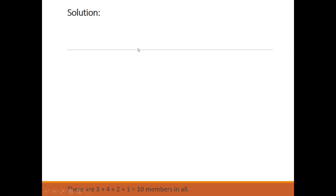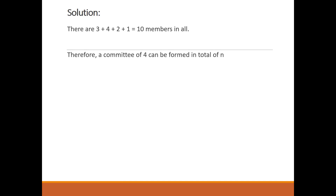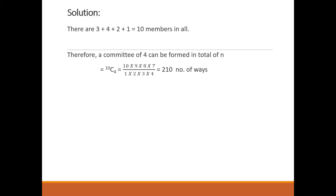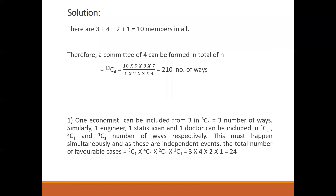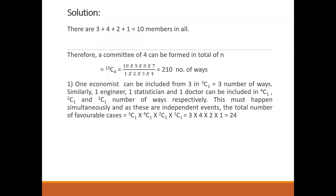A committee of 4 can be formed in 210 total ways. If I have one economist, it can be written as 3C1, which will be 3. So the total number of favorable cases will be 3 multiplied by 4 multiplied by 2 multiplied by 1, which gives me 24. So 24 divided by 210 gives me 0.11. Either you write 42 or 43 — it is 0.114285 something, so I have written 0.1143. Those who want up to 4 decimal places write 0.1143; those who want only 2 decimal places can write 0.11. Both answers will be considered correct.